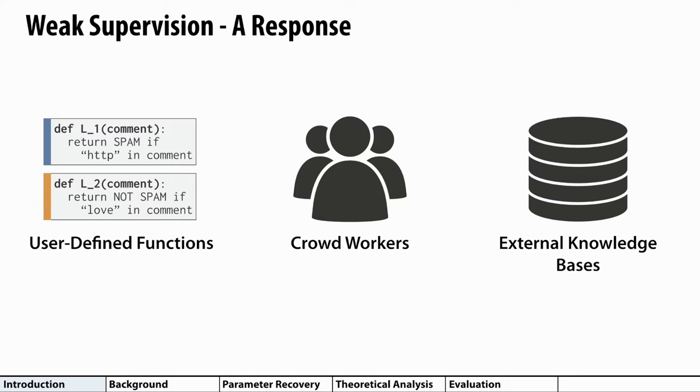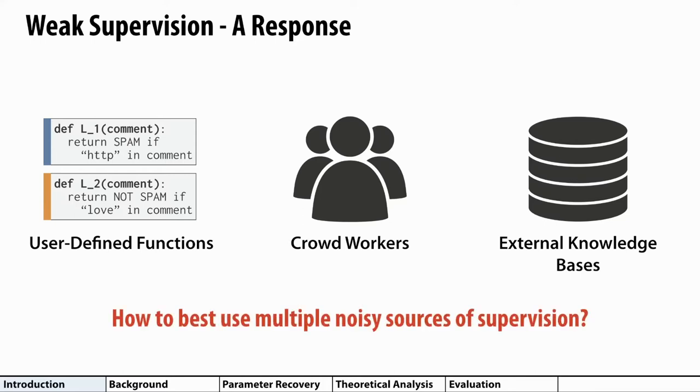These weaker sources of supervision are usually cheaper to obtain, but they can be noisy and conflict with each other. For example, a user-defined function may not cover all edge cases, or crowd workers may produce noisy labels. So a critical challenge in weak supervision is how to best use multiple noisy sources of supervision together.